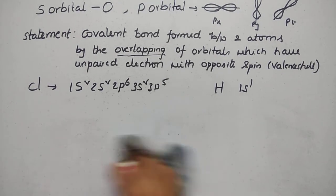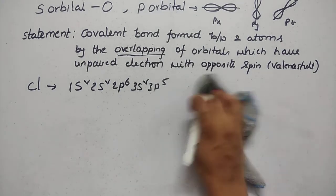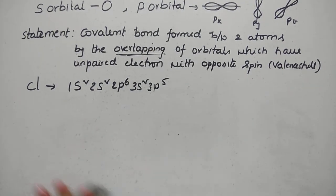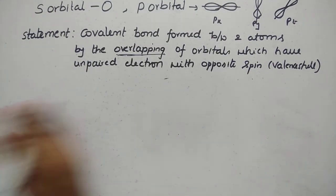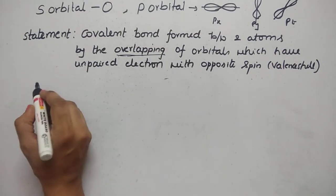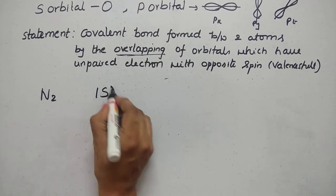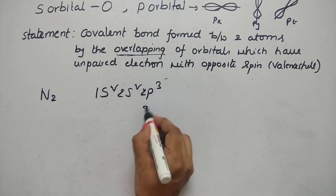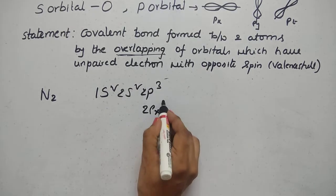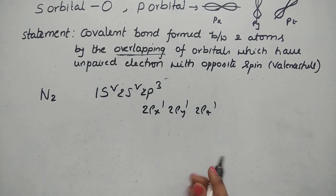Next, nitrogen N2. Nitrogen has atomic number 7 with electronic configuration 1s2, 2s2, 2p3 — specifically 2px1, 2py1, 2pz1. Nitrogen has three unpaired electrons.